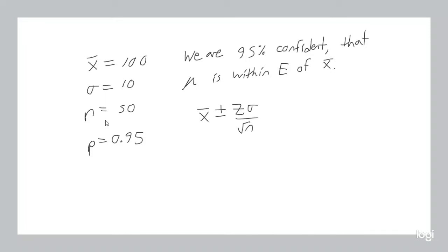We know what sigma is. We know what n is. We know what x bar is. What we have to find is that z value.